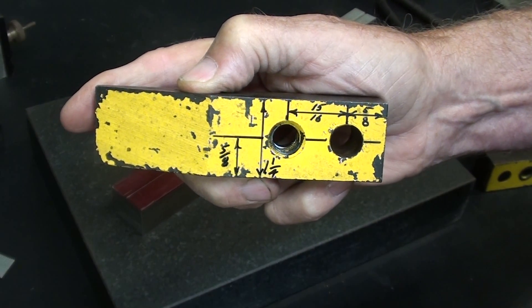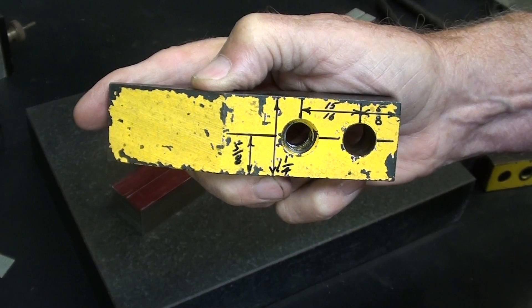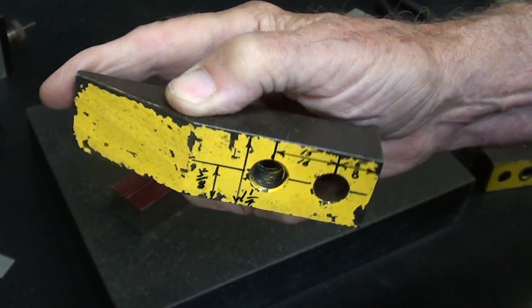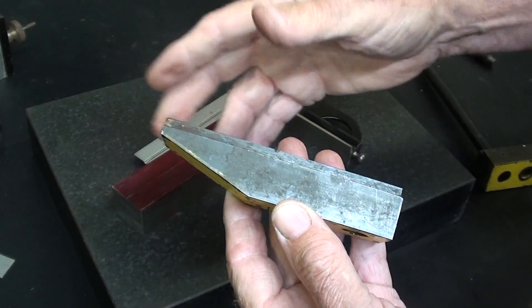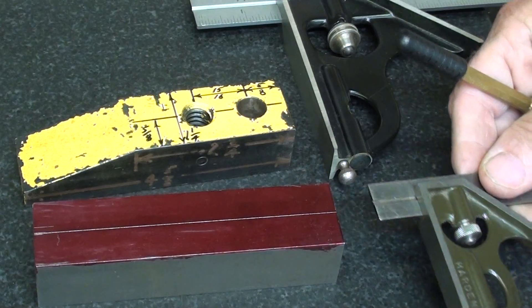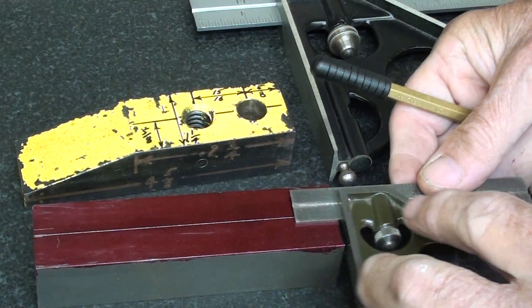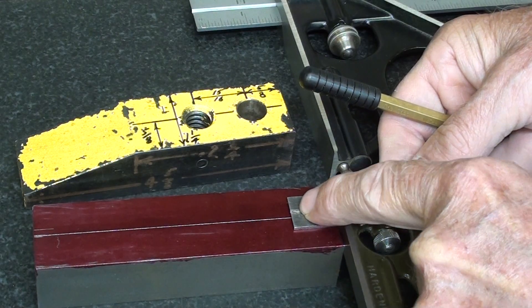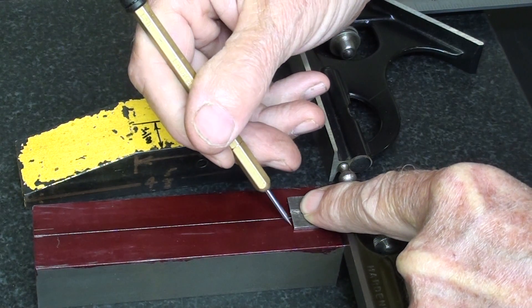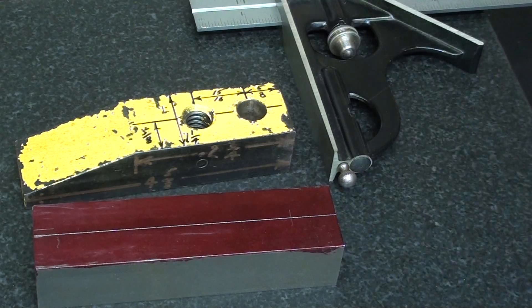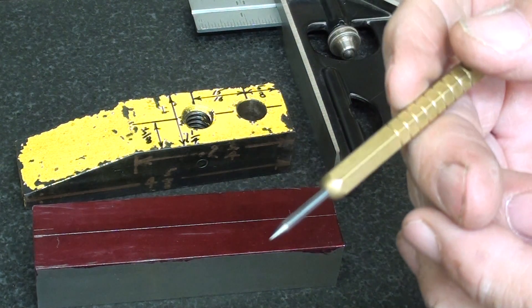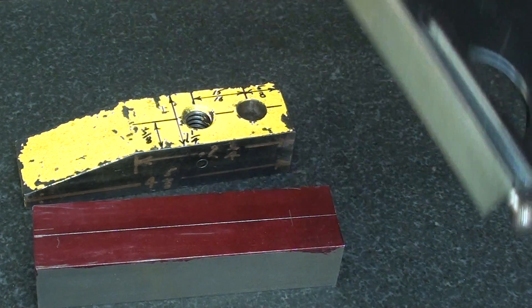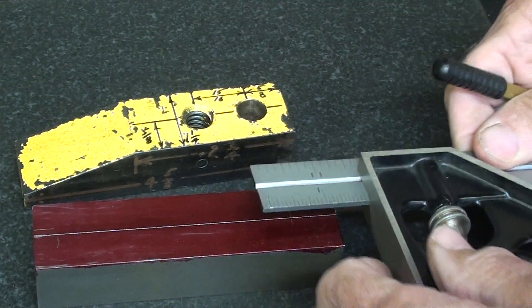And I'll do that with a combination square. You can do it any way you want. And you can make this any length you want. If you want to go a little longer or shorter, that's fine also. This square is set for 3/4. Make sure there's no burrs on your work. That doesn't show up very well, because the point is so fine. And this square is set for 1 and 11/16.